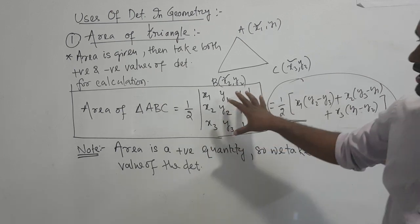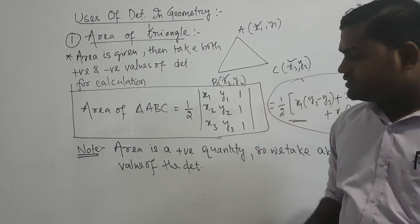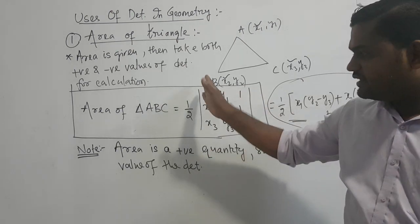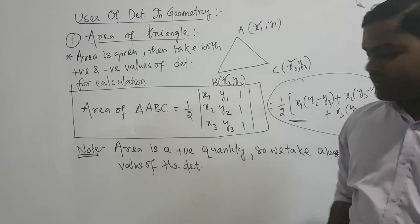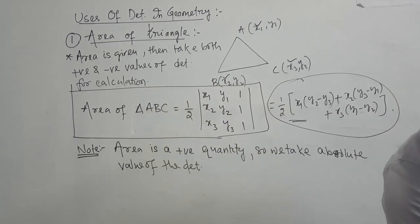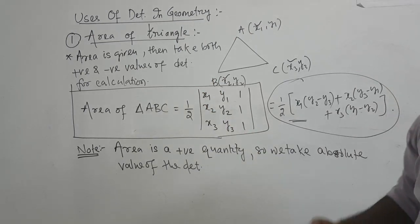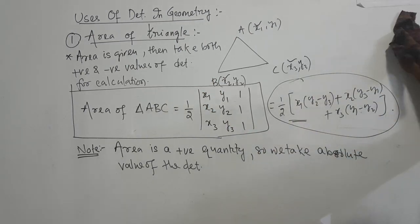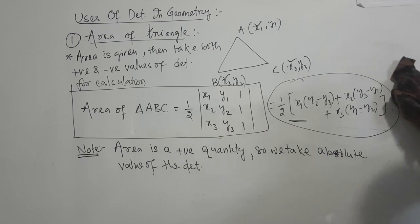So the formula for area of triangle is: half of the determinant of x1, x2, x3 / y1, y2, y3 / 1, 1, 1.